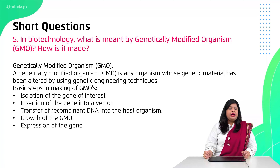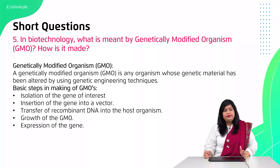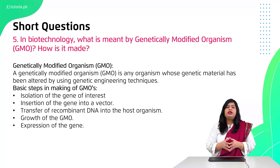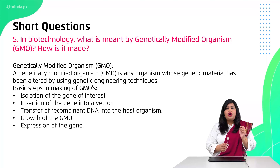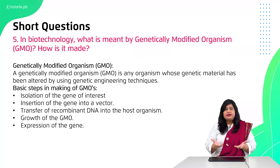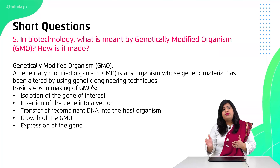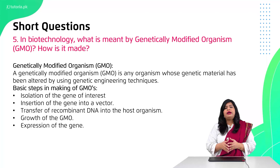The next question is: In biotechnology, what is meant by a genetically modified organism and how is it made? A genetically modified organism, or GMO, is any organism whose genetic material has been altered by genetic engineering. GMOs are made through basic steps of genetic engineering: first, isolation of the gene of interest; then insertion of that gene into a vector; then transfer of recombinant DNA into the host organism; then growing the GMO and observing the expression of the gene.